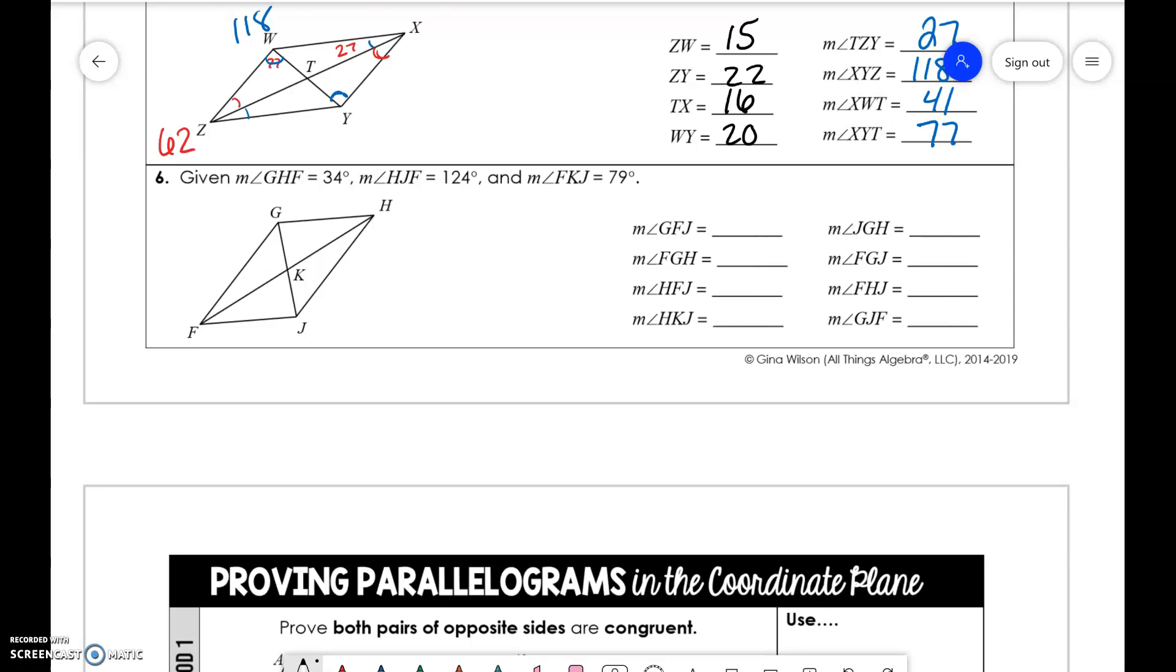So here we have angles. So G, H, F is 34. F, J, H is 124. And F, K, J is 79. So we have G, F, J, so we do 180 minus 124 is 56. Then we have F, G, H, which is 124. It's the same thing as J down there. H, F, J is 34, alternate interior angles. H, K, J. So what we need to do here is see that these two angles here make a straight line. So 180 minus 79 is 101. Then we have J, G, H.